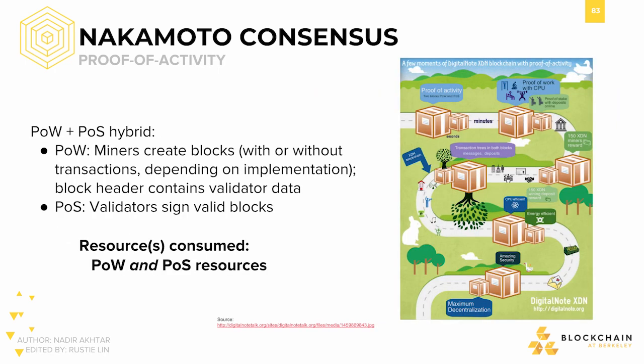Proof-of-activity is a hybrid consensus mechanism that borrows from both proof-of-work and proof-of-stake. The general algorithm is as follows: first, miners solve and submit blocks in the standard proof-of-work fashion. Then the system switches to proof-of-stake — the block header contains data representing a random group of validators who are required to sign the new block. Like in proof-of-stake, the more coins a validator has staked, the more likely they are to be chosen. The block fees and rewards are split among miners and validators. Once the validators have signed the newly found block, it is complete. In proof-of-activity, the resources consumed are both computational power and native currency.